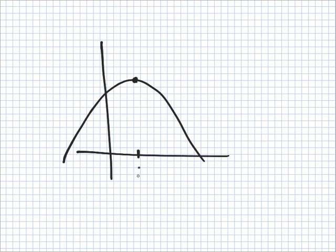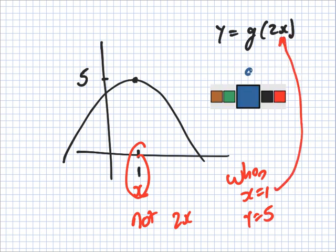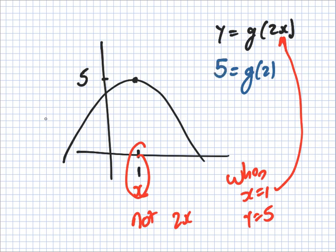Their picture here, Jerry. This is 1 and this is 5. And they said Y equals G(2X). So here, this is X, not 2X. So when X equals 1, Y equals 5.